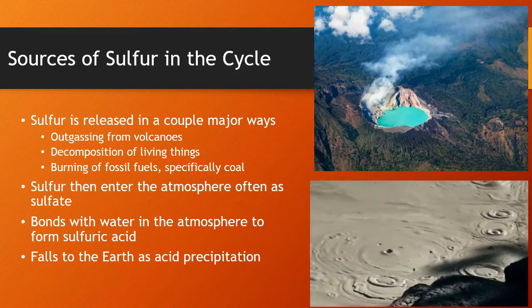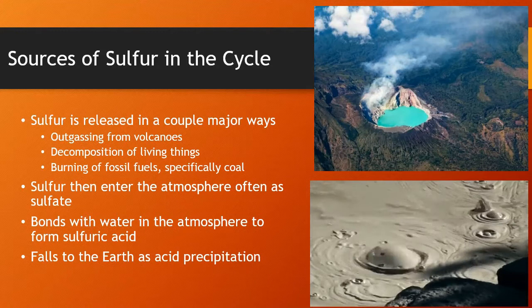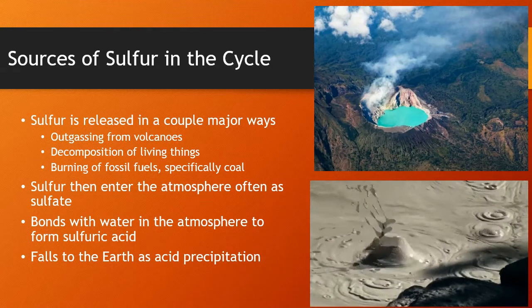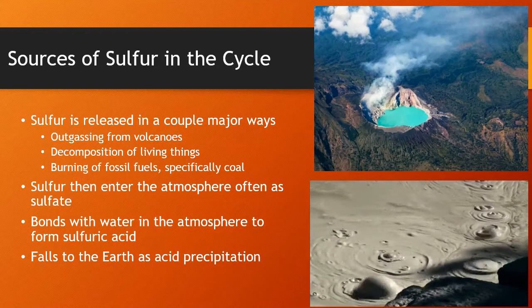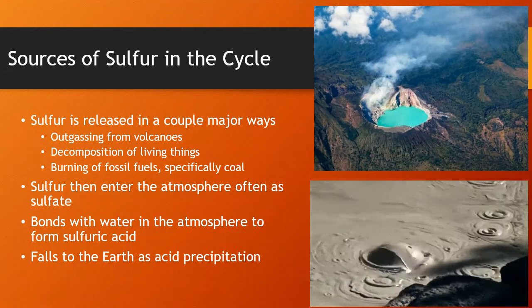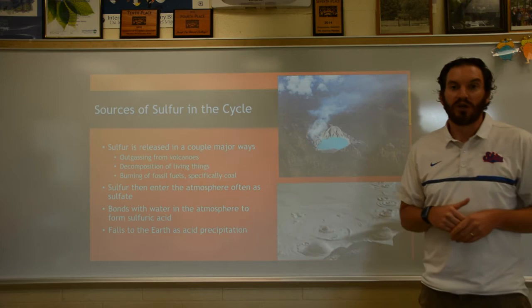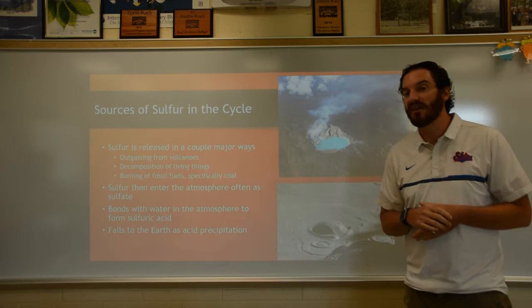How do we get sulfur into the atmosphere? It naturally gets into the atmosphere from outgassing from volcanoes — the planet kind of regulates and deals with that. Decomposition of living things also releases sulfur compounds from inside your body. But one of the big ways humans are amplifying sulfur in the atmosphere is through the burning of fossil fuels, specifically coal. When you hear about burning coal, just think it is the worst possible thing you can be doing — it produces a lot of sulfur that goes right up into the atmosphere.